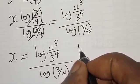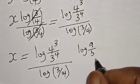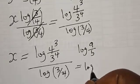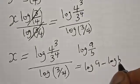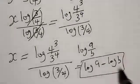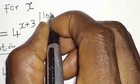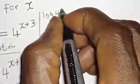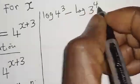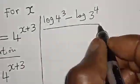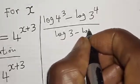Now remember one of the laws of logarithm: log(a/b) is the same thing as log a minus log b. Using this, our equation becomes: log(4 raised to power 3) minus log(3 raised to power 4), divided by log 3 minus log 4.